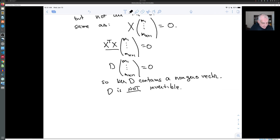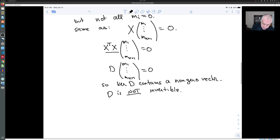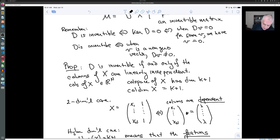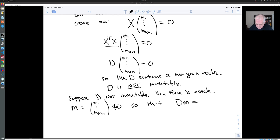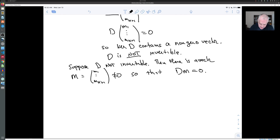So what about the other direction? Just to recap here, remember that our condition for invertibility said that d is invertible if and only if whenever dv, when v is a non-zero vector, dv is not zero. So I just showed that we have a non-zero vector for which dv is zero. And that means that d is not invertible. What about the other direction? Suppose d is not invertible. Then there is a vector m, which is not equal to zero, so that dm equals zero. Well, remember what d is. d is x transpose x, so x transpose xm equals zero. And we have to make sense of this.